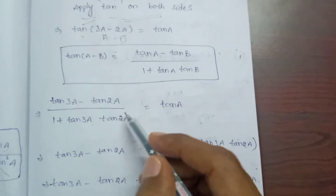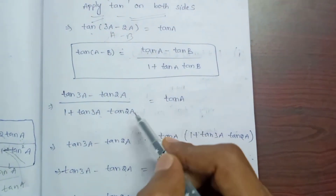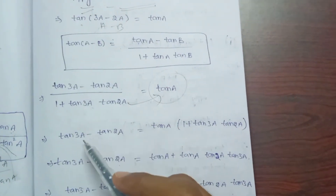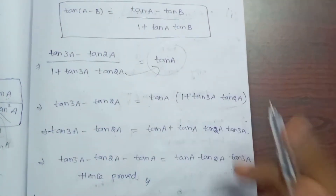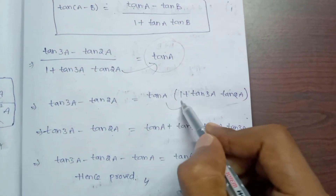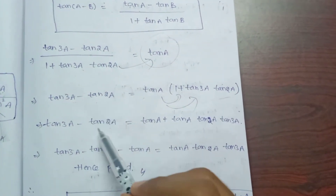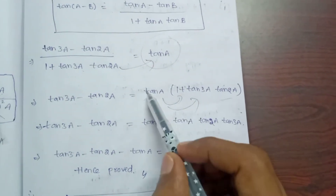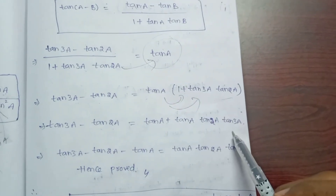So here tan3a minus tan2a is equal to tan a into (1 plus tan3a into tan2a). Expanding this, tan3a minus tan2a equals tan a plus tan a into tan2a into tan3a. So tan a into tan2a into tan3a equals tan3a minus tan2a minus tan a.